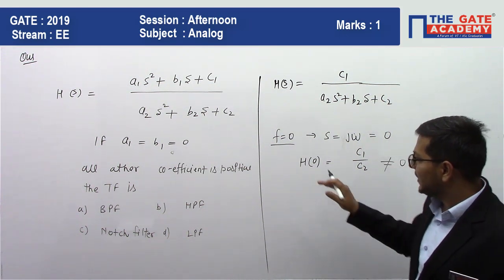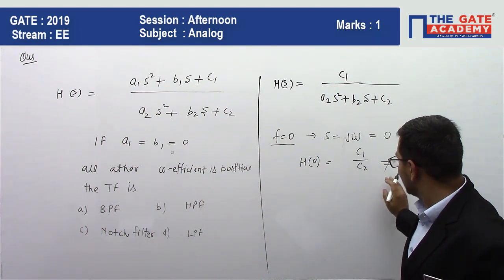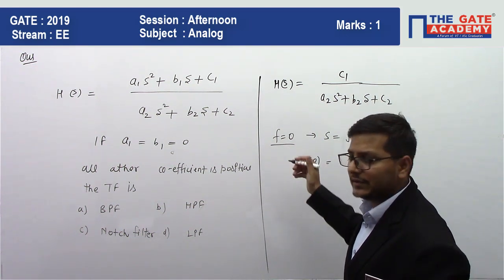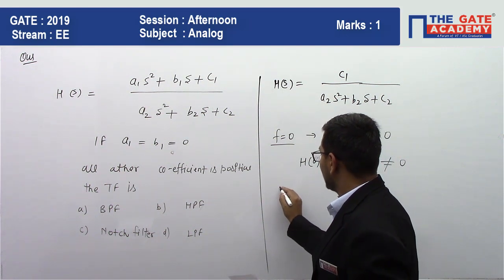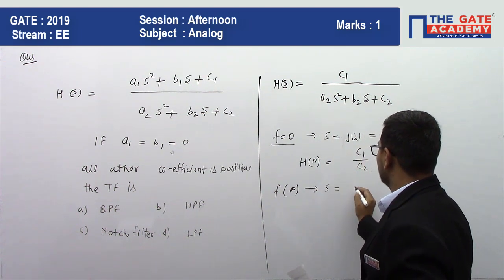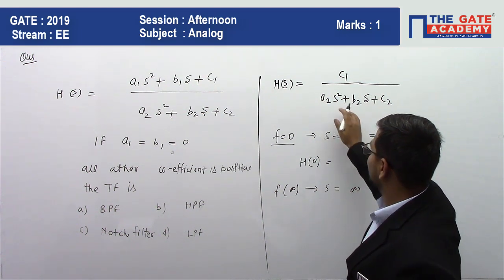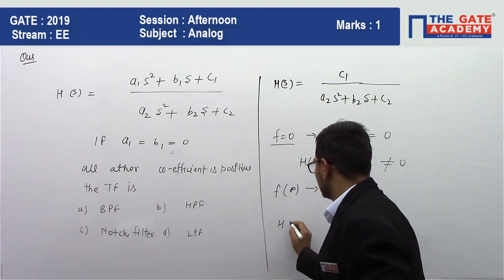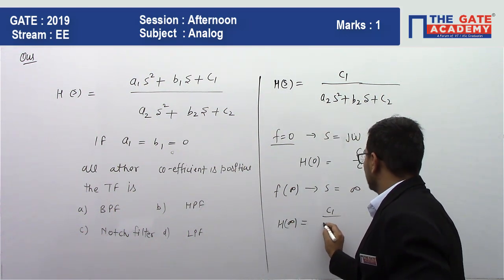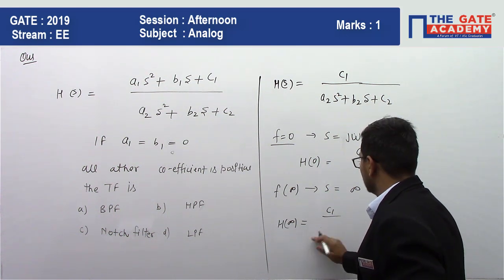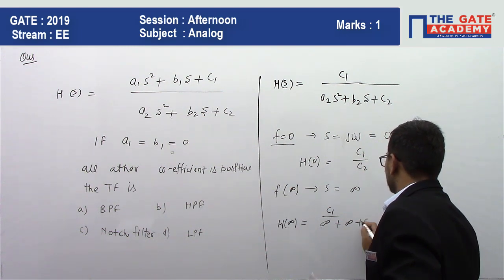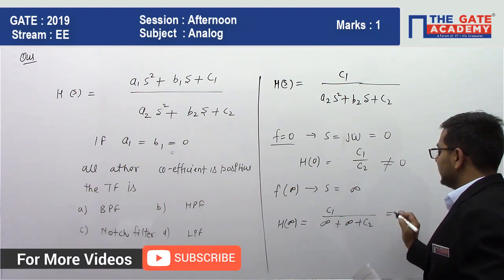At low frequency, our output is not zero. Now we will see infinite frequency. We will put f tends to infinite. It means H tends to what? In that case, we will see what we find: c1 upon infinity plus infinity plus c2. It means output will be zero.